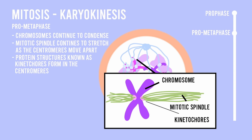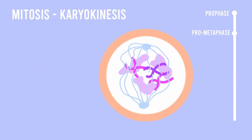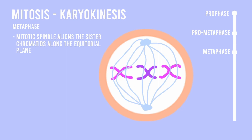The third step of karyokinesis is known as the metaphase. During the metaphase, the mitotic spindle aligns all the captured and condensed sister chromatids along the equatorial plane, otherwise known as the metaphase plate, which exists midway between the two poles of the cell.